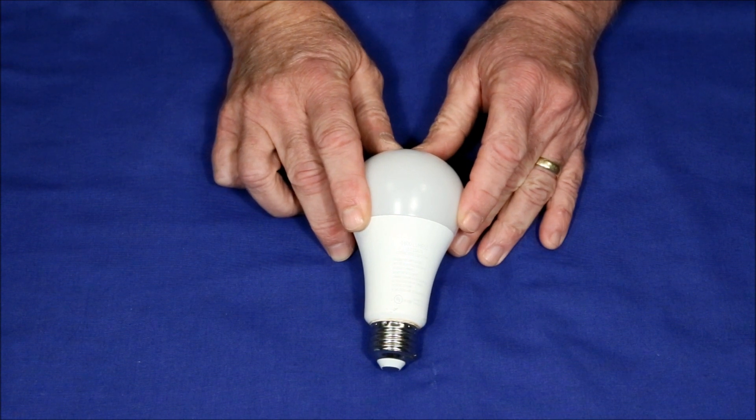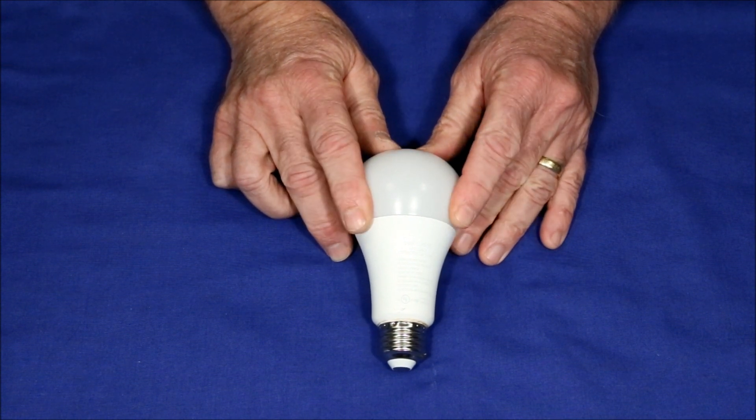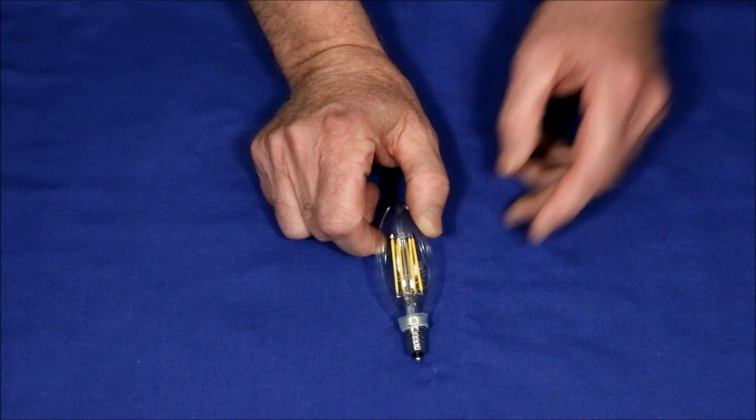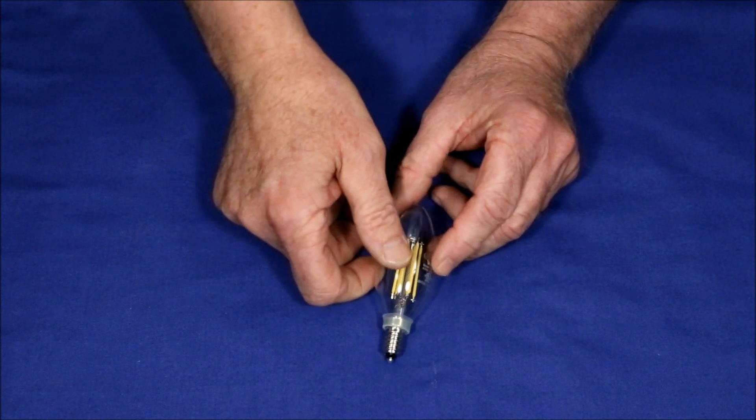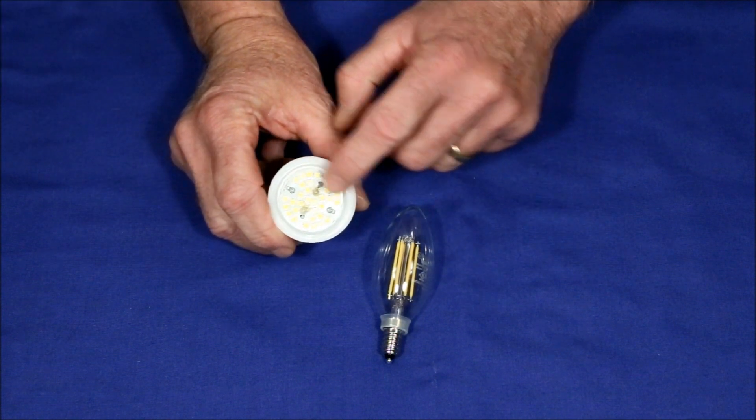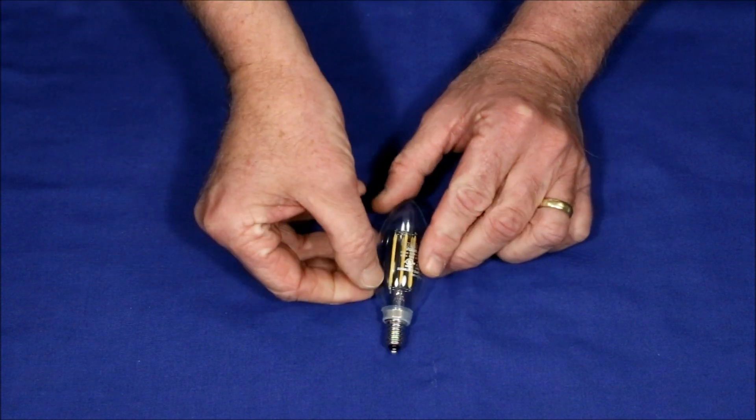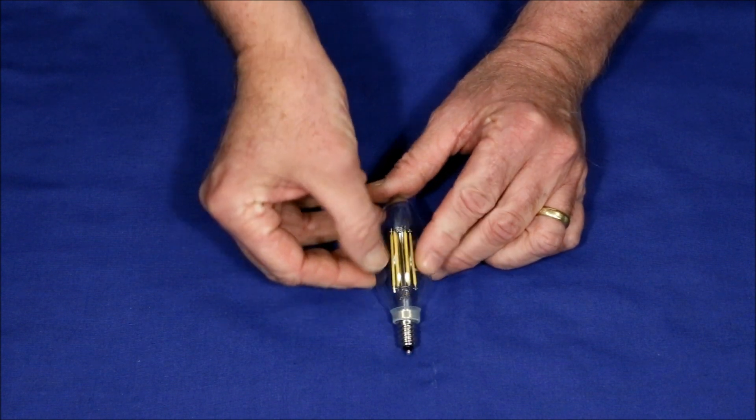Fortunately there's a new guy on the block which can resolve both of these problems. The filament LED light bulb. A filament light bulb has instead of a bunch of surface mounted LEDs on the base it has these yellowish looking rods.